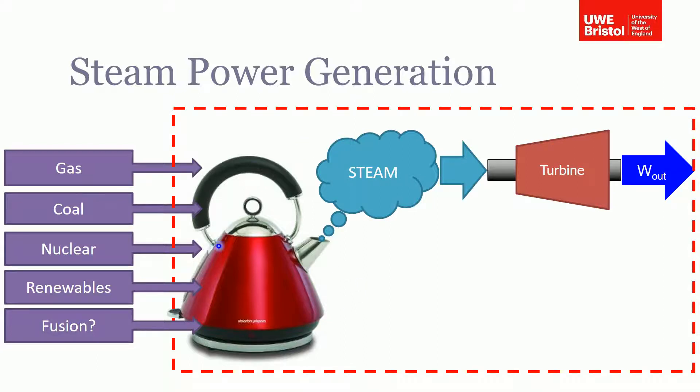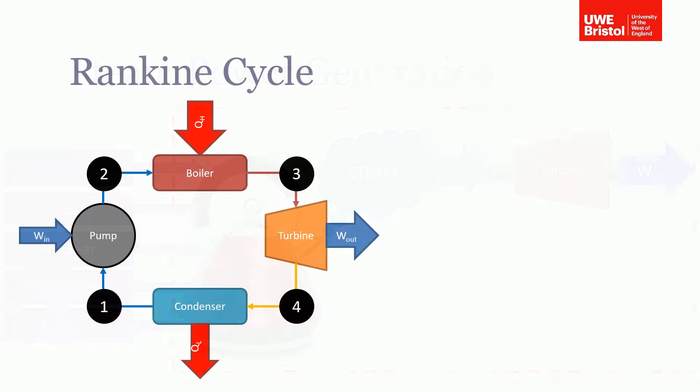Once we've got the energy in, this is covered in a different lecture. But what I'm looking at is what's in the box - how the steam is generated and the electricity produced. Basically the way that's done is with what's called the Rankine cycle.